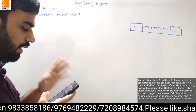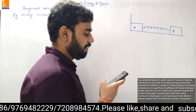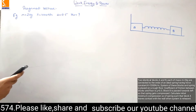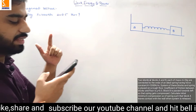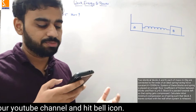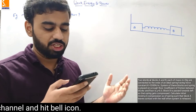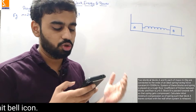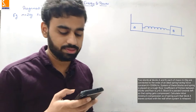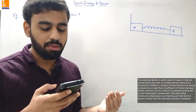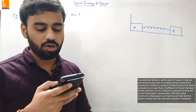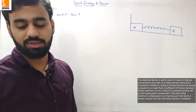The question is: two identical blocks A and B, each of mass m = 2 kg, are connected to the ends of an ideal spring having force constant k = 1000 N/m. The system of these blocks and spring is placed on a rough floor. The coefficient of friction between the block and the floor is 0.5. Block B is pushed towards the left so that the spring gets compressed. Calculate the initial minimum compression x₀ of the spring such that block A leaves contact with the wall when the system is released.